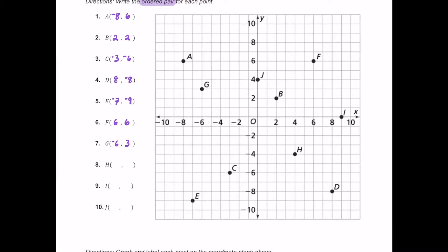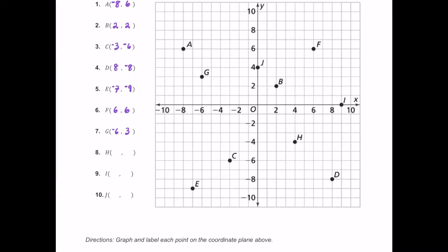What about H? For H, that's located in quadrant four. To get here we move four units to the right first — so that's plus four — and then move four units down, so that's negative four. So positive four comma negative four.